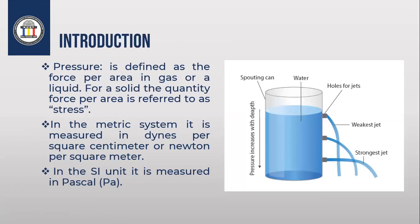The definition: pressure is defined as force per area. We have different types of force per area. For gas or liquid, force per area is called pressure. While for solid, the same quantity — force per area — is referred to as stress. So the difference between stress and pressure is that pressure is force per area for liquids and gases, while for solids, force per area is called stress.